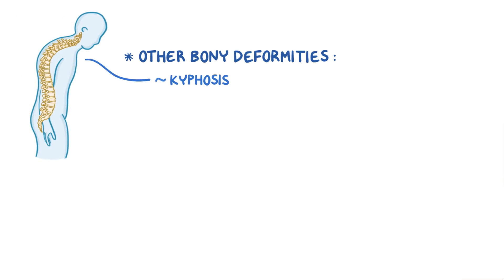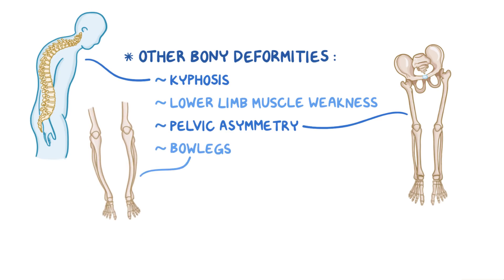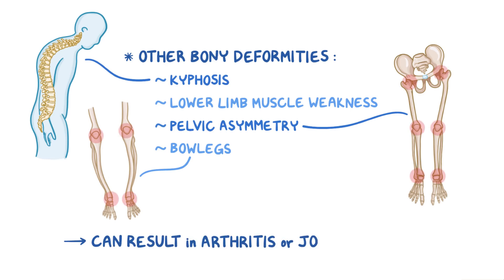Other bony deformities from Paget's disease of bone include kyphosis, which is an excessive curvature of the spine making a person face down to the ground. Lower limb muscle weakness from misshapen vertebrae compressing the spinal cord, and pelvic asymmetry. It can even lead to bow legs if the femurs get too weak to support a person's weight and they begin to bend over time. If the parts of the bone involved in a joint become affected, it can result in arthritis or joint inflammation.